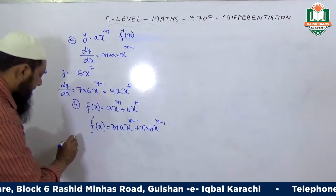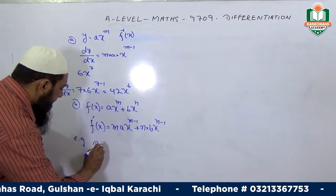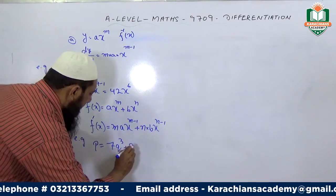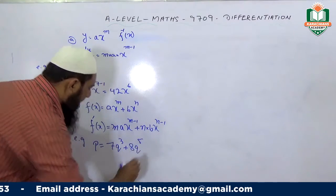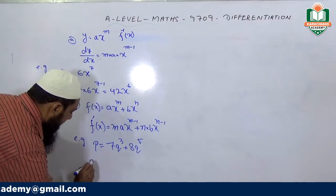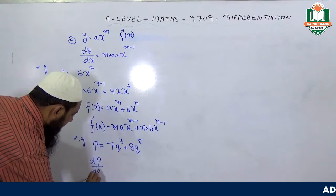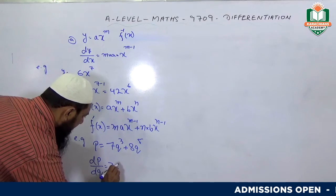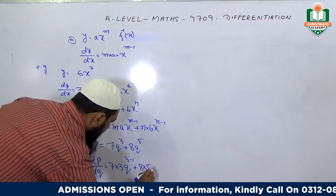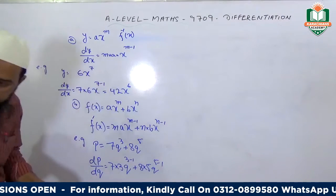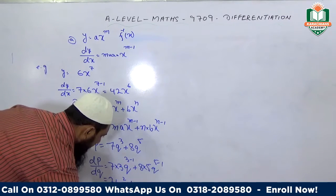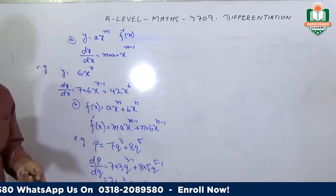Another example: p equals 7q^3 plus 8q^5. Differentiate p with respect to q. It becomes dp/dq equals 7 times 3q^(3-1) plus 8 times 5q^(5-1), which gives us 21q^2 plus 40q^4. That's the answer.